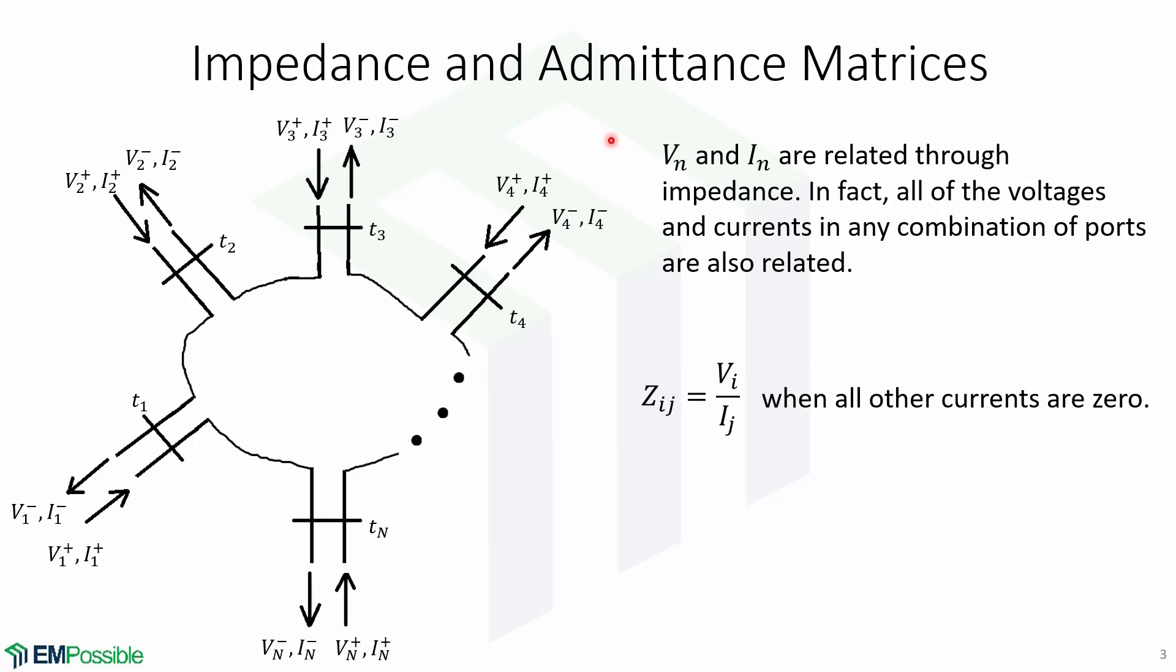Now, it is obvious that Vn and In are related through impedance. In fact, all of the voltages and currents in any combination of ports are also related. The voltage at the I port is related to the current at the J port through the impedance of the N-port network. This is how we define the impedance.